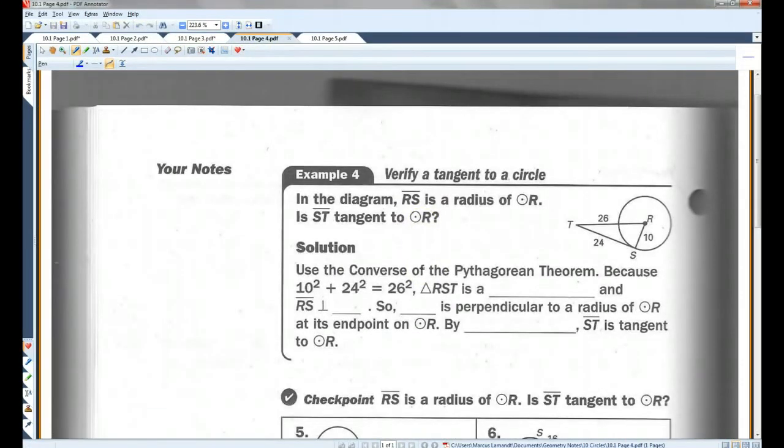Page four. Verify a tangent to a circle. In the diagram, segment RS is a radius. So we know that this is a radius of the circle. Is ST tangent to circle R? Now, this is what you need to think about. If this is a tangent line, and this is a radius, they have to make a right angle. Have to. That's what we just learned in the most recent theorem. If this makes a right angle, then we have shown here a right triangle.